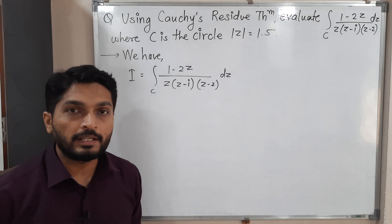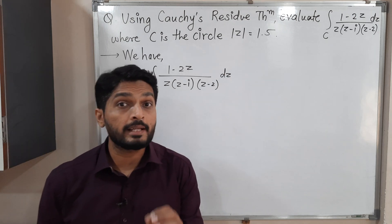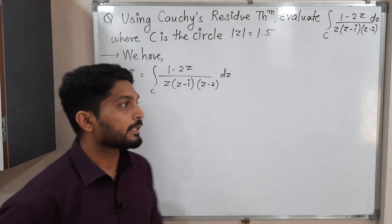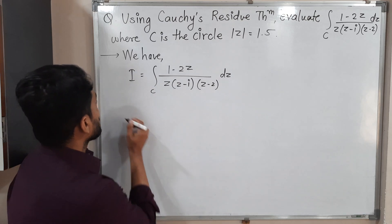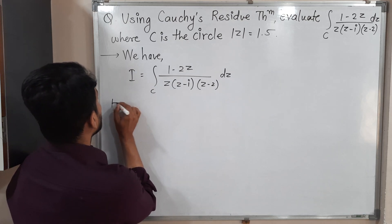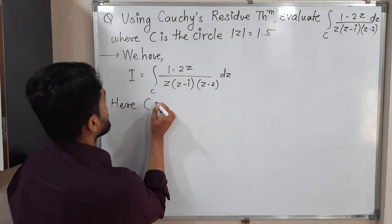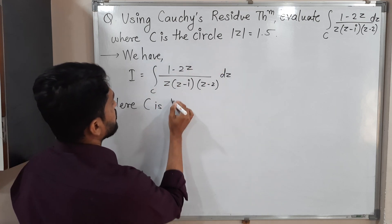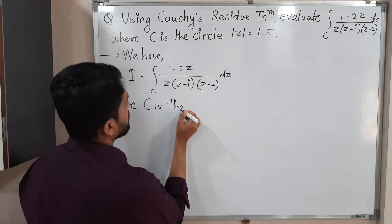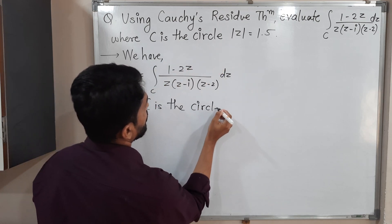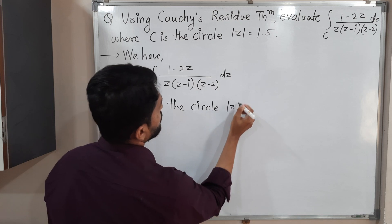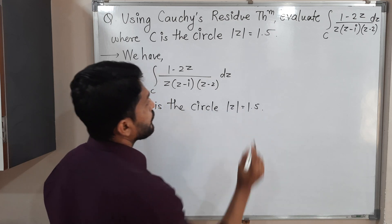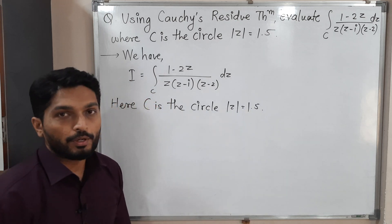So this is the given integral. The most important thing is curve C. Let me clearly mention: C is the circle with equation mod Z equal to 1.5.